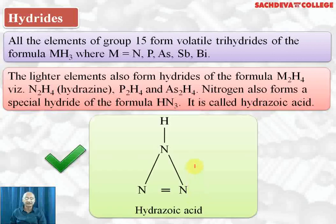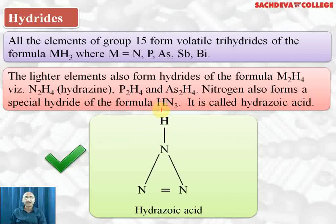HN₃ is the only hydride of nitrogen which is acidic in nature and it is called hydrozoic acid. The structure of hydrozoic acid involves a double bond between nitrogen and nitrogen, and single bonds with the third nitrogen, which is attached to hydrogen. When the bond breaks, H⁺ ion and azide ion (N₃⁻) are formed. NaN₃ is sodium azide and Ba(N₃)₂ is barium azide, from which we can prepare nitrogen. They are salts of hydrozoic acid.